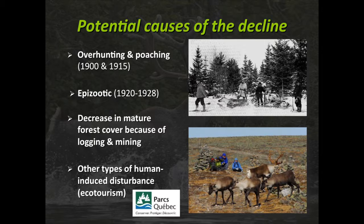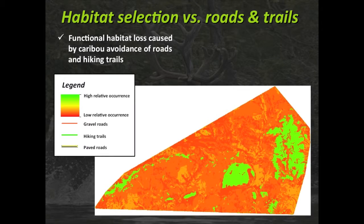For the past couple of decades, we've been collecting evidence of other types of human-induced disturbance. One is ecotourism activity within Gaspésie National Park, with tourists using hiking and skiing trails — which appears disturbing for those animals. One of my grad students modeled the functional habitat loss induced by caribou avoidance of winter hiking trails. We are within the boundaries of the national park, so disturbance should be low, but it sounds like it's really important for those animals.